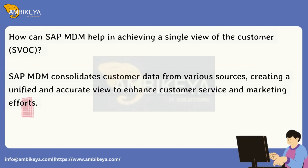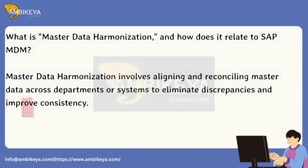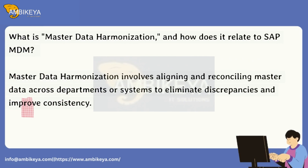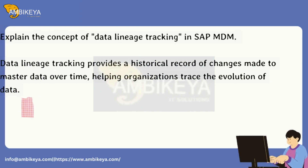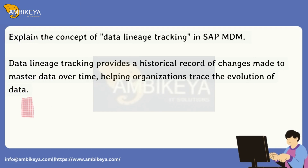How can SAP MDM help in achieving a single view of the customer (SVOC)? SAP MDM consolidates customer data from various sources, creating a unified and accurate view to enhance customer service and marketing efforts. What is master data harmonization and how does it relate to SAP MDM? Master data harmonization involves aligning and reconciling master data across departments or systems to eliminate discrepancies and improve consistency. Explain the concept of data lineage tracking in SAP MDM. Data lineage tracking provides a historical record of changes made to master data over time, helping organizations trace the evolution of data.